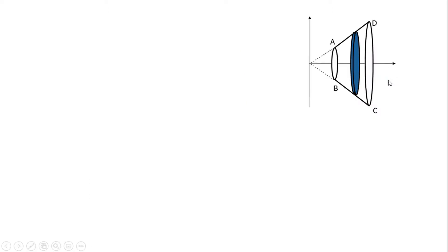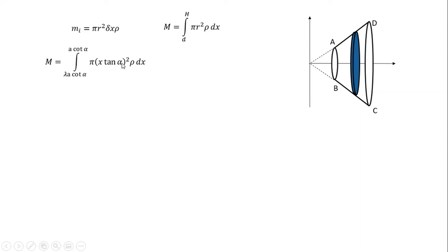Integration part. How do we integrate? We integrate from this point to form H. If we integrate from simple h to simple d, it is the same as pi r into capital H. So we integrate from d to h: pi r, dx into rho. Substitute x tan alpha, from d to alpha and capital H to alpha.